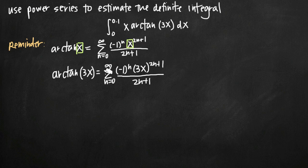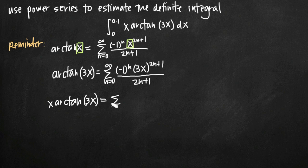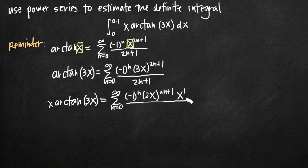Now all we need to do is multiply x out in front of both sides — essentially multiplying both sides of this equation by x. What we get on the left-hand side is x·arctan(3x), which matches our original function. On the right-hand side, that's going to be equal to the infinite sum from n equals 0 to infinity of negative 1 to the n times 3x to the 2n plus 1, divided by 2n plus 1, times x. Now we're going to use algebra to simplify this power series representation.